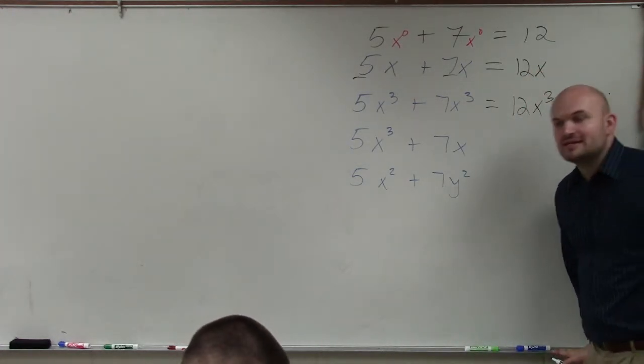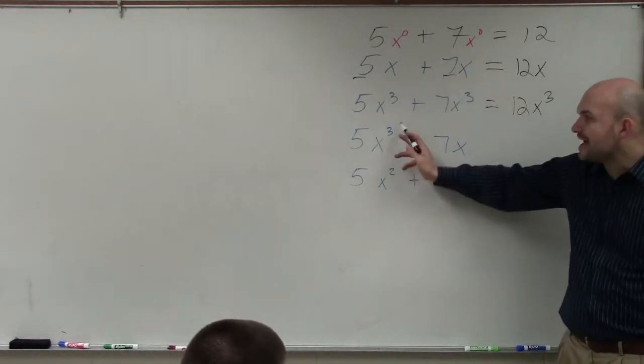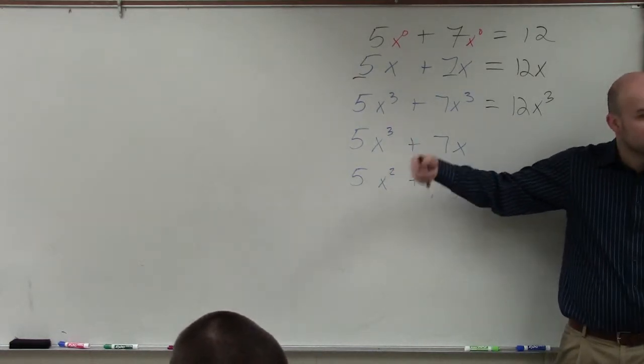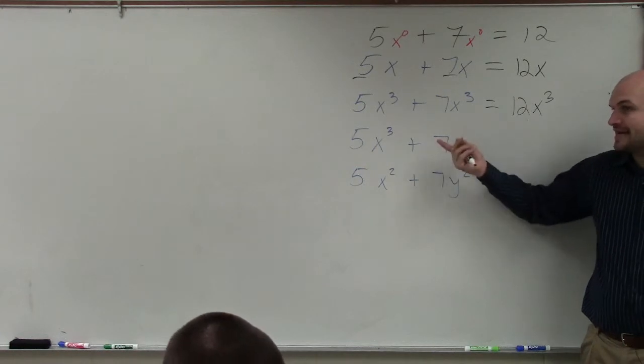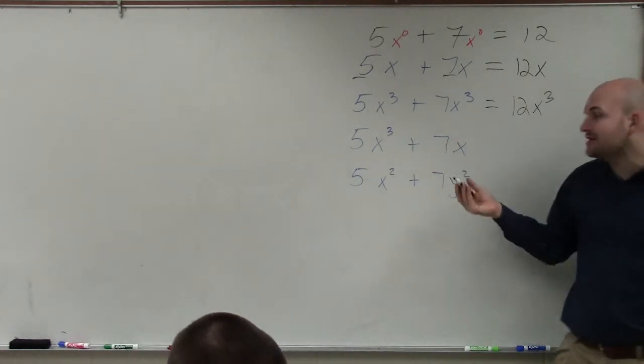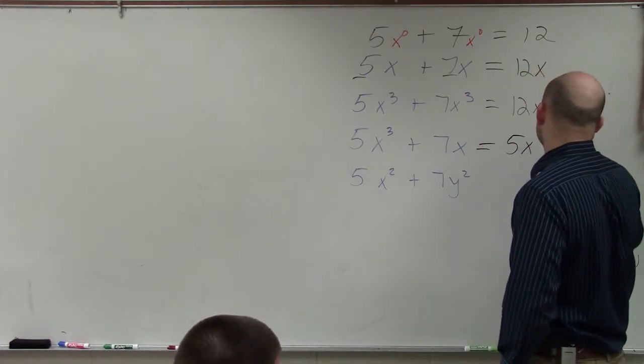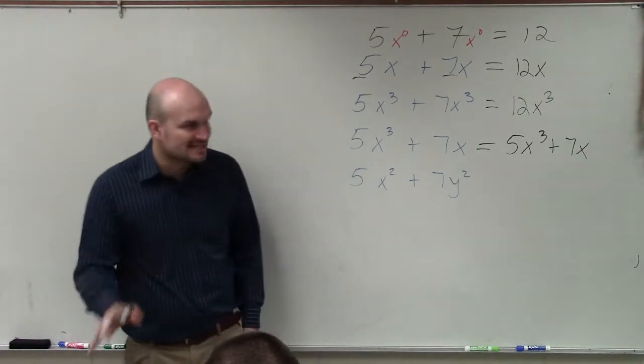Now let's look at some ways that we cannot combine like terms. For instance, 5x cubed plus 7x. The variable factors for x cubed is x times x times x, where the variable factors for x is just x. Therefore, these are not like terms. So to combine them, you just rewrite the expression. It's just going to stay as is.